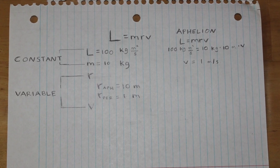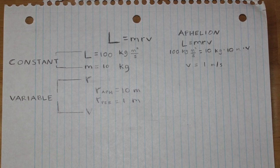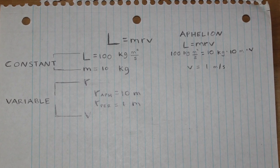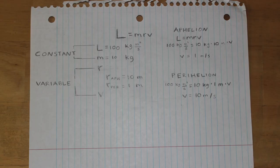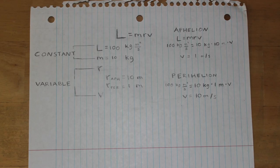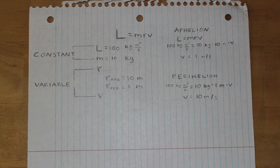Plugging into L equals m times r times v for the position at aphelion yields a velocity of 1 meter per second. And at perihelion, plugging into the equation gives us a velocity of 10 meters per second.